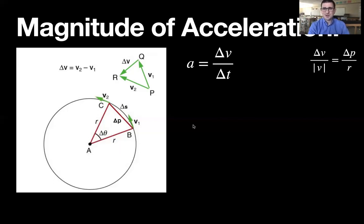Because I have a delta V here, I'm going to try to isolate the delta V over here. So I get delta P times the V, either V1 or V2, since the magnitude is the same, since it's moving with a constant speed, I don't really care, divided by R.